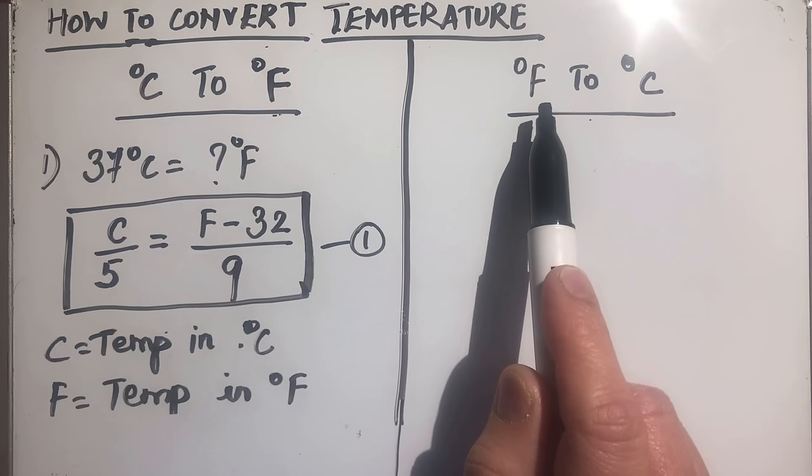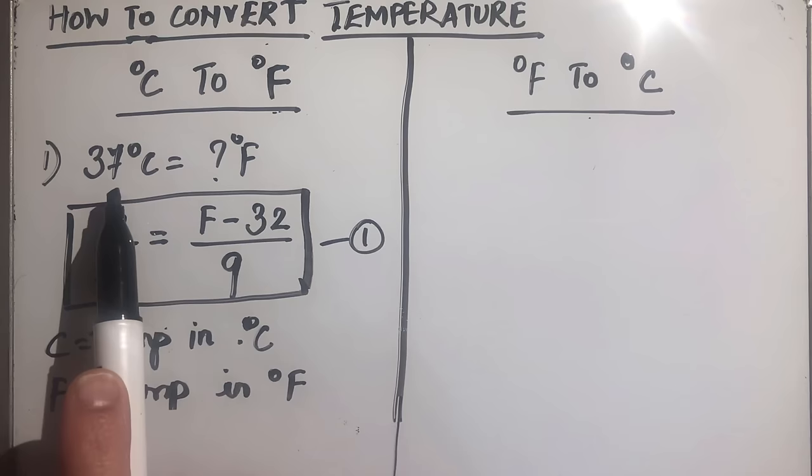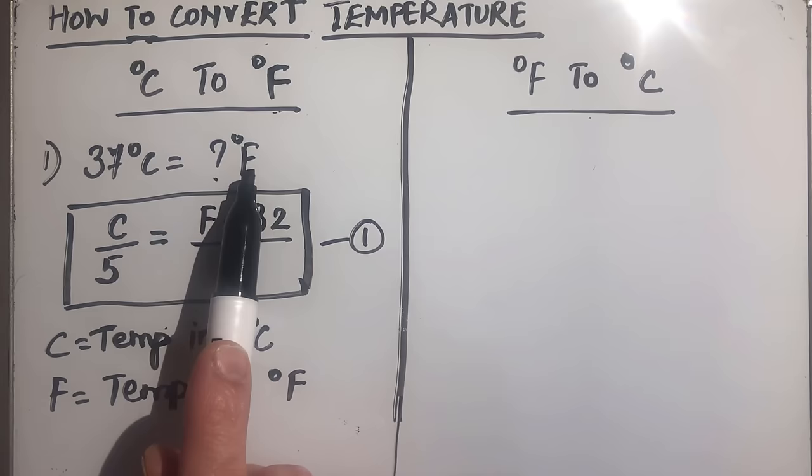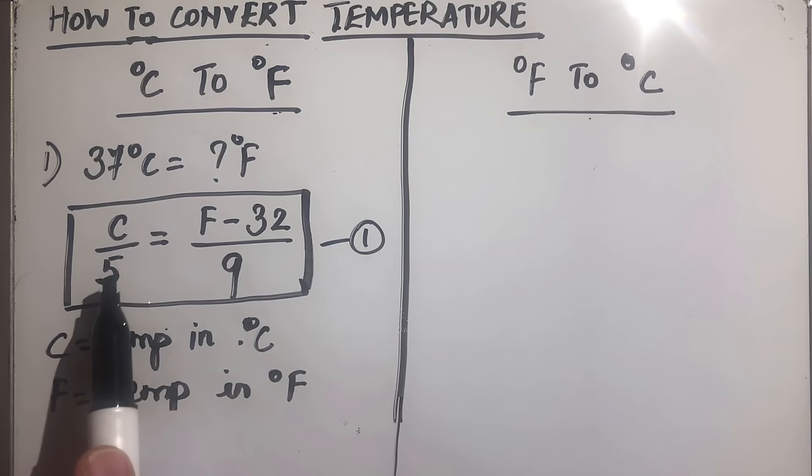Suppose we need to convert 37 degrees centigrade to degrees Fahrenheit. For this we should remember the basic formula, which is C over 5 is equal to F minus 32 over 9, where C is the temperature in centigrade and F is the temperature in Fahrenheit.